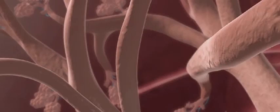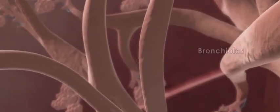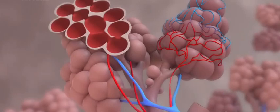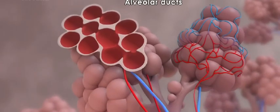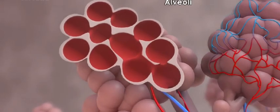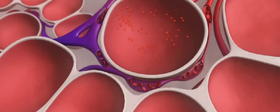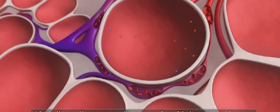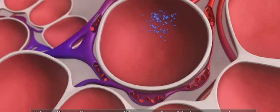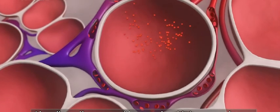Each bronchi will lead to a lung where they will divide further into bronchioles and alveolar ducts, which terminate as alveoli. Alveoli are tiny grape-like sacs in which gas exchange takes place.